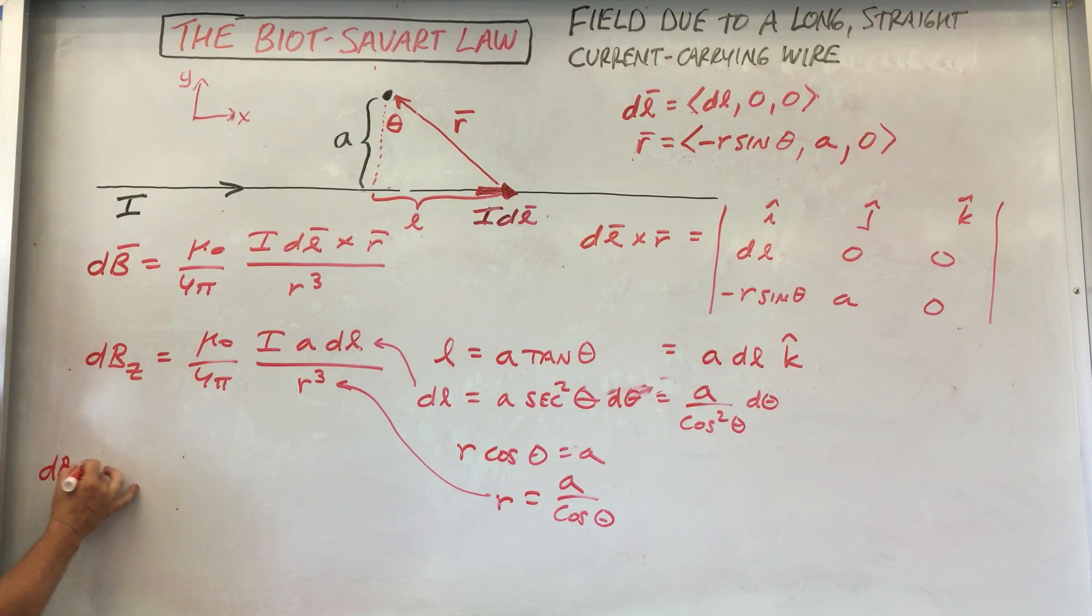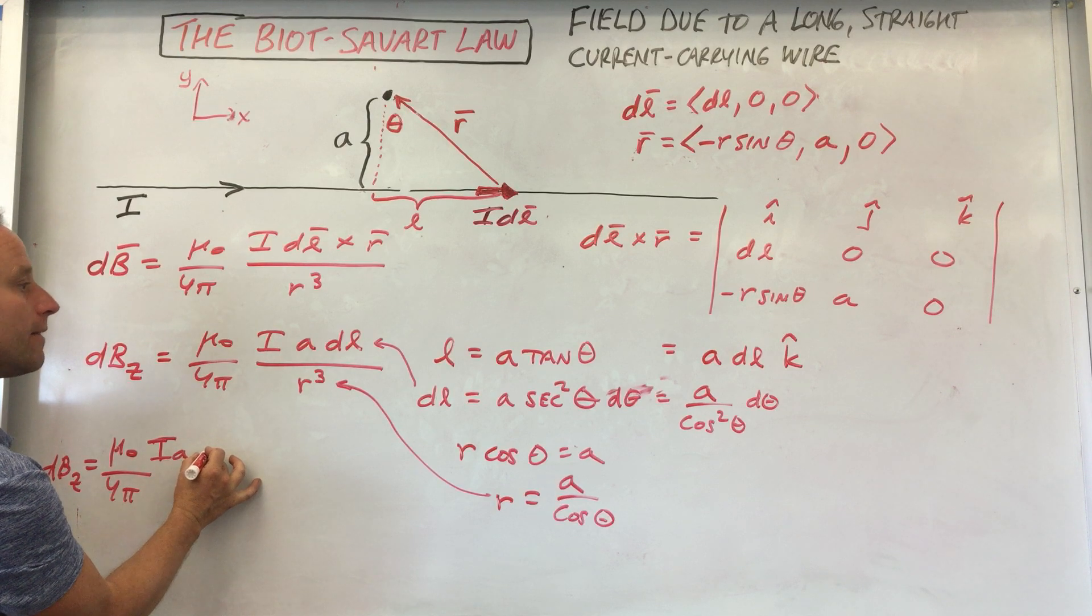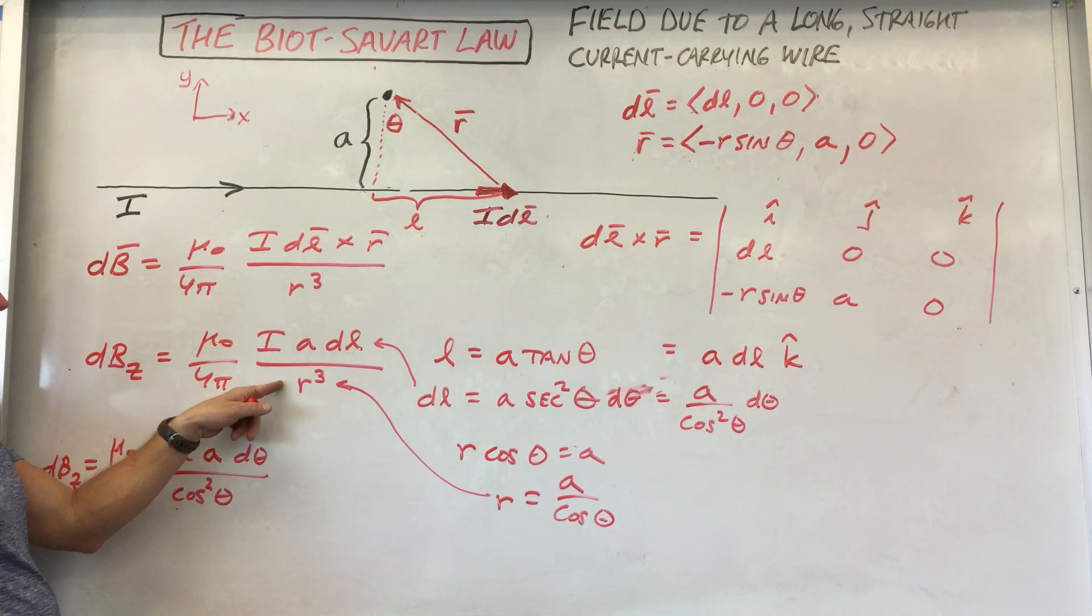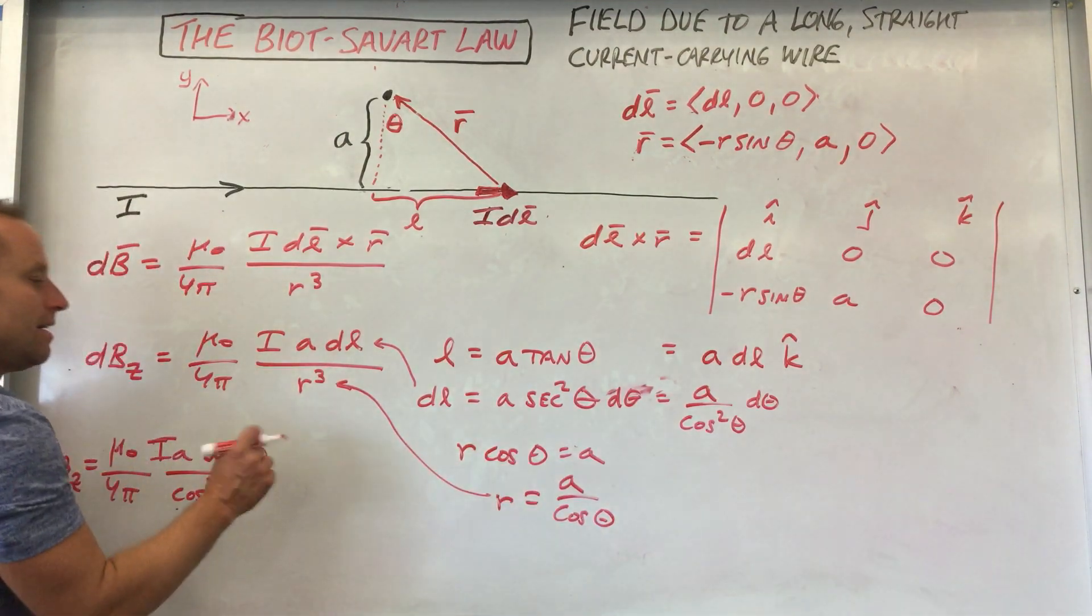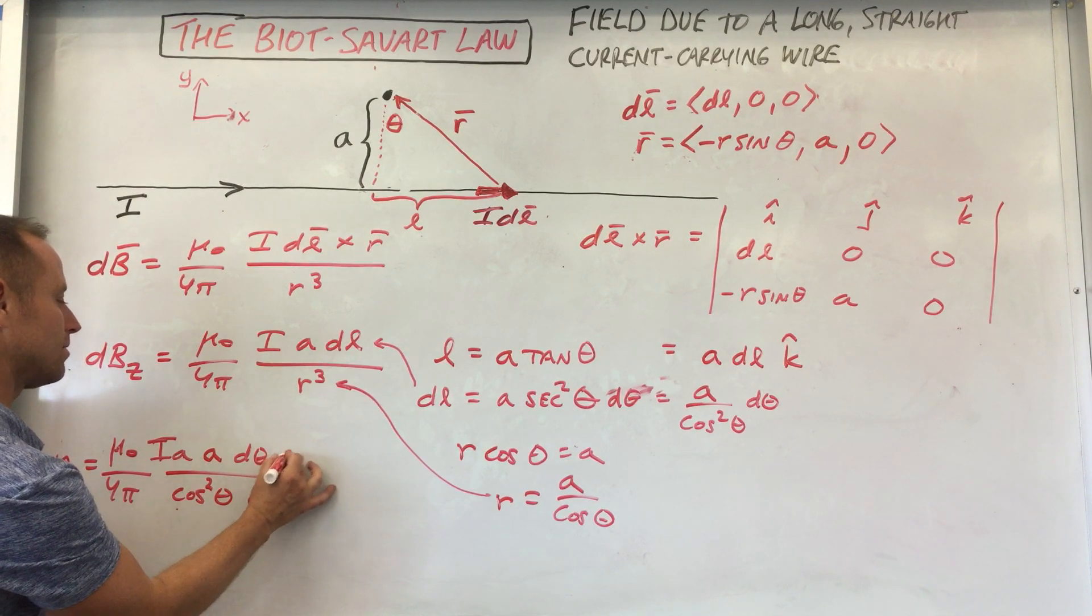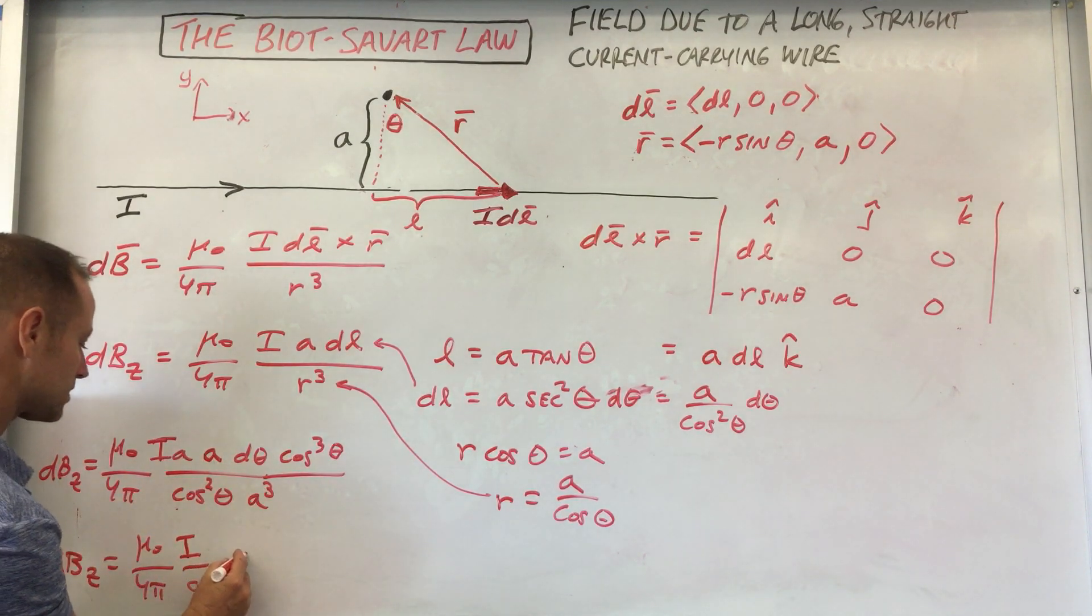So you got dBz equals mu naught over 4 pi. I, A. Now let's go for this. DL is A over cosine squared theta d theta. So we're going to put that in there: A over cos squared theta d theta. And then we have an R cubed in the bottom. Well R cubed is A over cosine theta. So what we need to do is basically turn this upside down and cube it because it's 1 over R cubed. So we will get an A cubed downstairs and a cos cubed upstairs. We're going to get some spectacular cancellations. So dBz equals mu naught over 4 pi. Let's see. I, we have A times A is A squared over A cubed. So you can get I over A. And then all that's left here is you have cosine cubed over cosine squared. So that's going to be cosine theta. So cosine theta d theta.